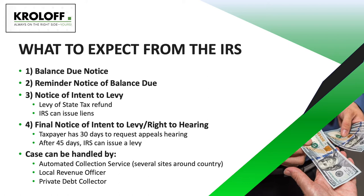The first notice is simply a statement with a breakdown of how the balance due was calculated. If the taxpayer ignores this notice, he or she will receive a reminder notice of the balance due several weeks later. If the taxpayer again does not contact the IRS after the second notice, they will then receive a notice of intent to levy stating that their state tax refund can be levied and that liens can be issued. The final notice of intent to levy gives the taxpayer 30 days to appeal the determination and request a hearing before the IRS can levy their bank account or garnish their wages. Sometimes these collection matters are handled by ACS, or Automated Collection Service. Other times, a local revenue officer will be the one handling the tax matter, and recently the IRS began handing over certain collection cases to private debt collectors.